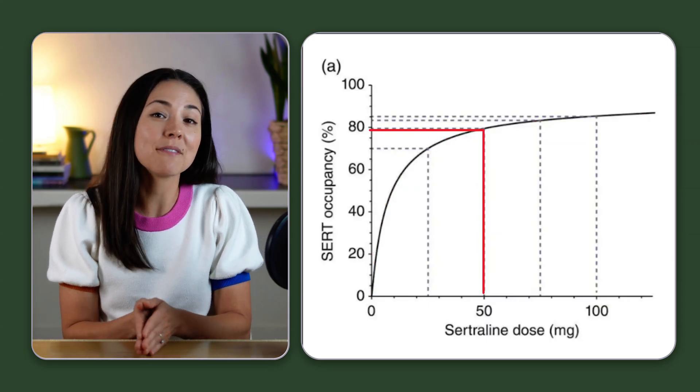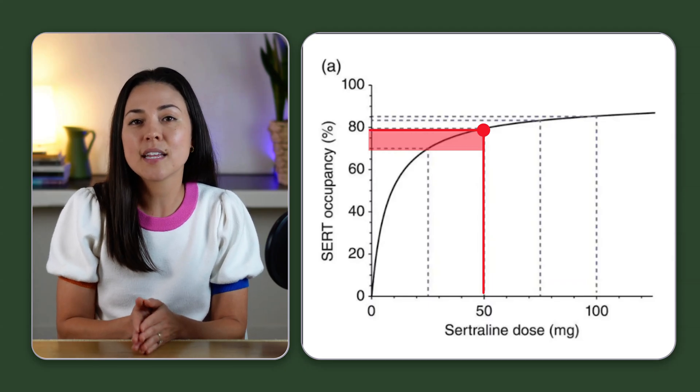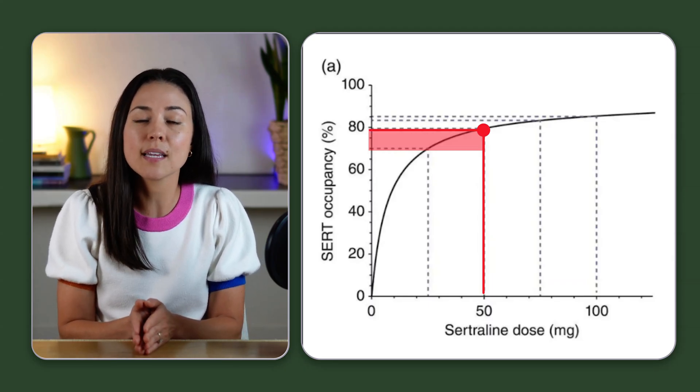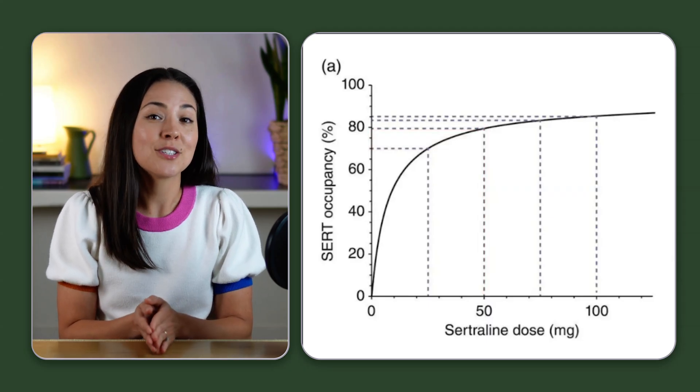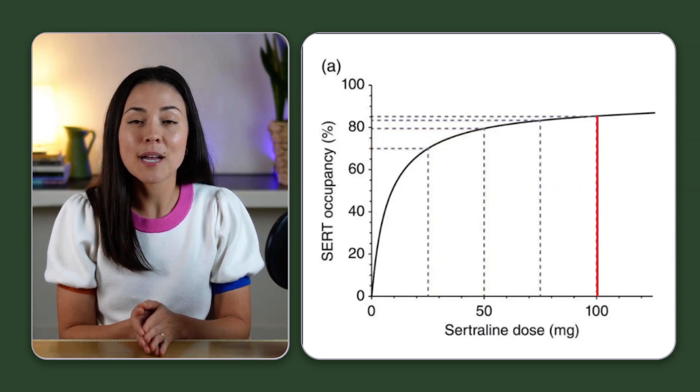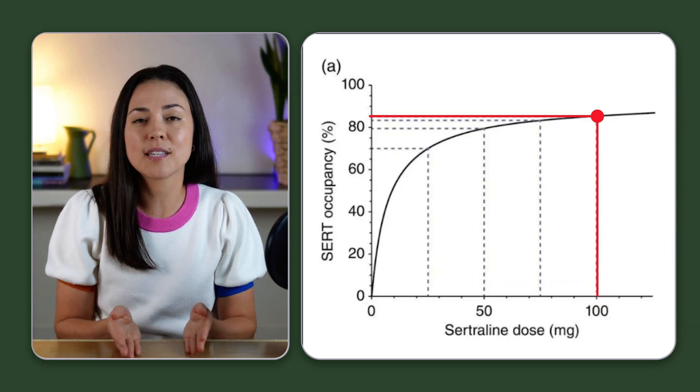So going from 25 milligrams to 50 milligrams doesn't double the effect. It only nudges the percentage of serotonin transporter occupancy by about 10% up to roughly 80%. And then doubling the dose again to 100 milligrams brings it up only another five percentage points to around 85% occupancy.